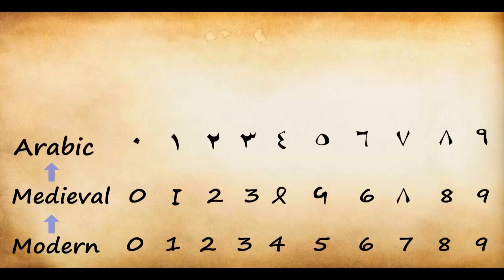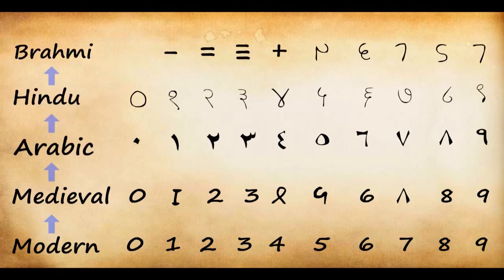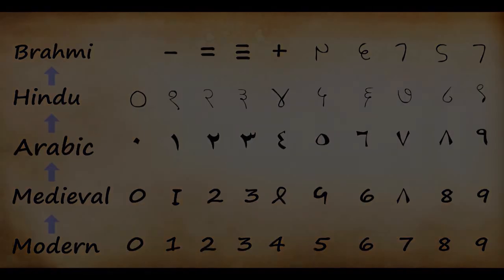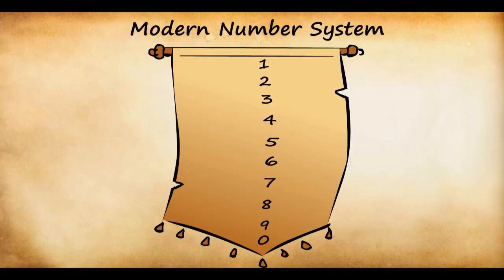These modern number system came from medieval. Medieval came from Arabic. Arabic in turn came from Hindu. And the Hindu came from Brahmi. You would realize that Brahmi had only 9 numbers. Zero was not introduced then. Zero came in much later when the Hindu script was written. So these are the 10 numbers which everyone is familiar with, which is our modern number system.